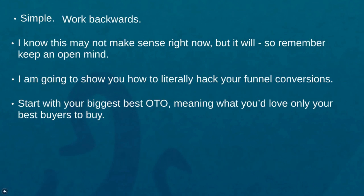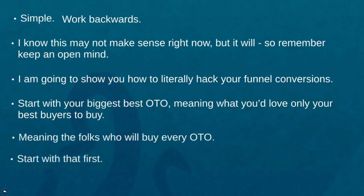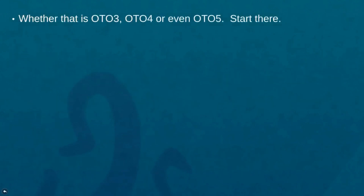What we need to do is start with your biggest, best one-time offer — meaning what you want only your best buyers to buy. Out of a thousand buyers you might only have 200 or 400 buy everything. Think closely: what do you want those premium buyers to buy? What is your biggest, baddest, best one-time offer — or the most expensive one-time offer at the very end? Start with that first, whether it's one-time offer three, four, or even five. Pause this video and write that down.